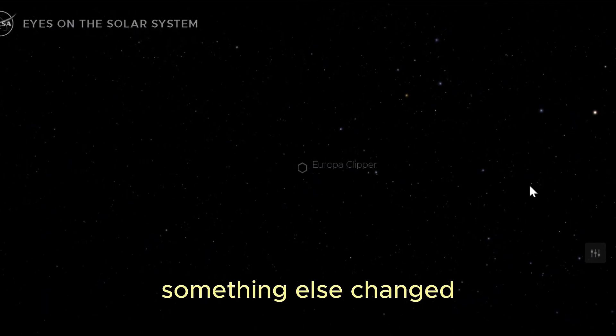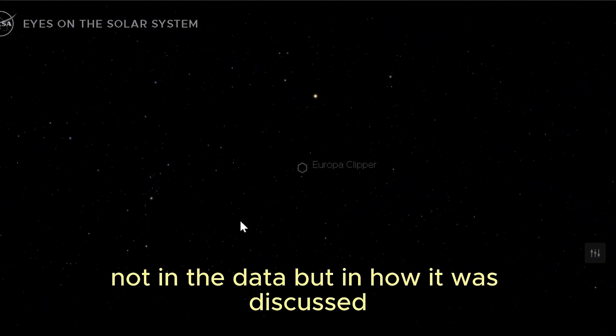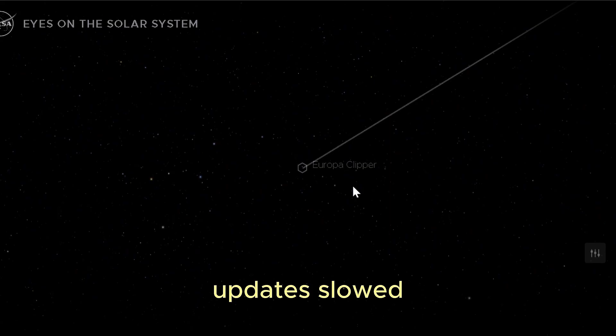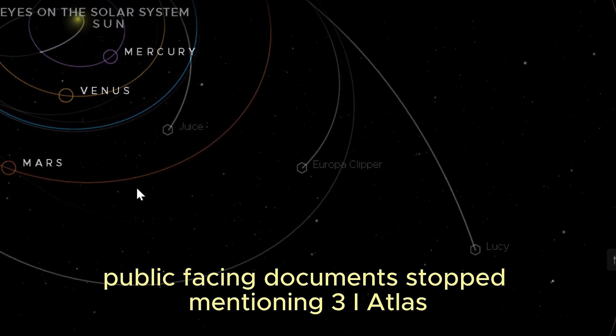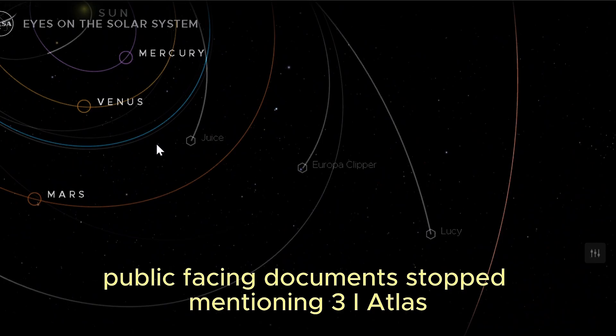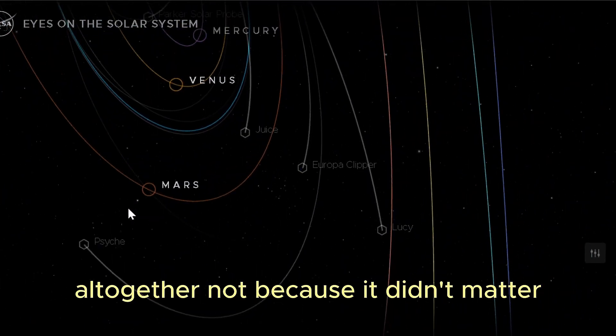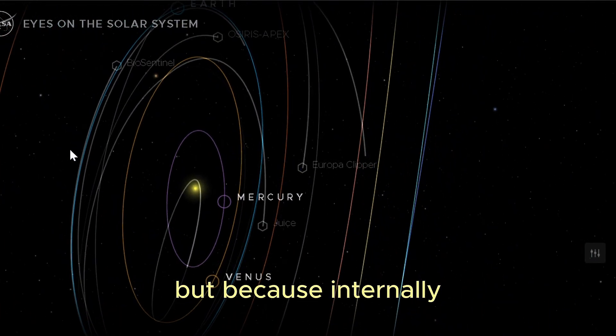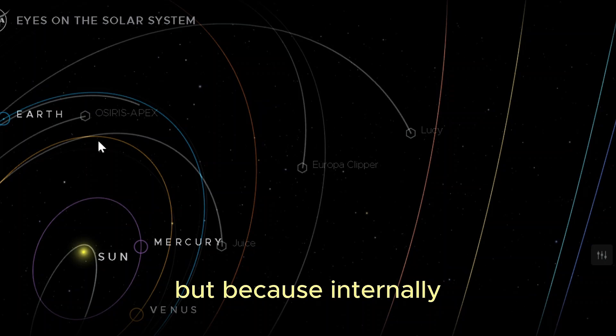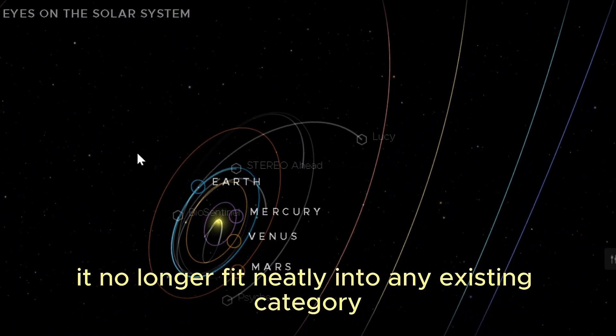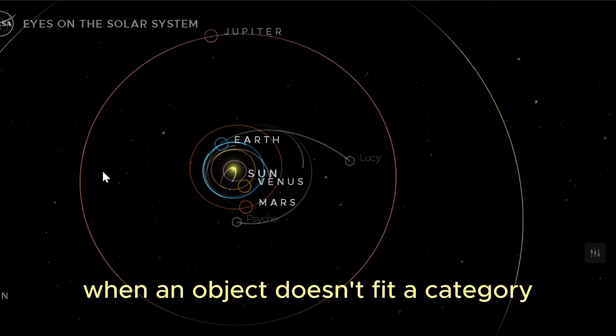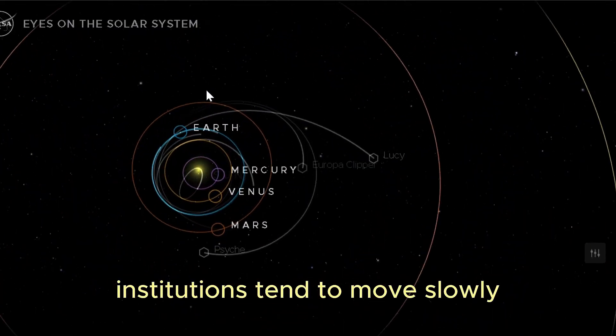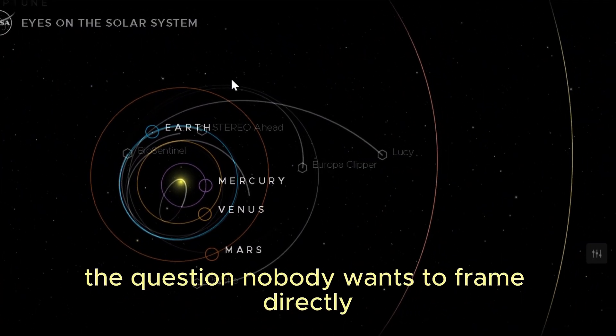After that, something else changed, not in the data but in how it was discussed. Updates slowed, cross-department summaries grew more cautious, public-facing documents stopped mentioning 3I Atlas altogether. Not because it didn't matter, but because internally it no longer fit neatly into any existing category. When an object doesn't fit a category, institutions tend to move slowly. The question nobody wants to frame directly.